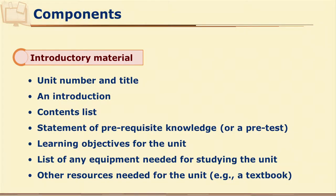What is there in introductory material? In introductory material, we write the introduction of that particular module. We write specific objectives or performance outcomes. We have the entire content list which gives the structure of that particular module. We also need to define prerequisite knowledge of a learner and may plan a short test so learners can assess their own previous knowledge before proceeding with learning.